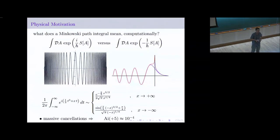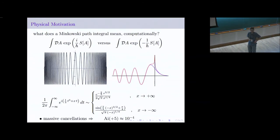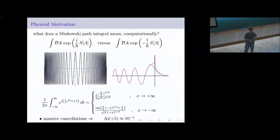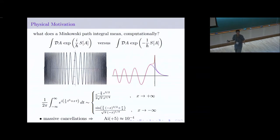We all know the resolution to this problem — we've all done it a million times. We deform the contour of this integral into the complex plane onto steepest descent paths. On the steepest descent paths, the integral is perfectly well defined: it's completely smooth and localized, with no oscillatory behavior whatsoever. You can simply do the integral on the steepest descent contour by Monte Carlo, Riemann sum, whatever.